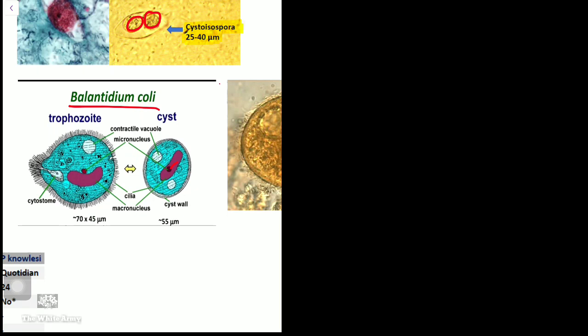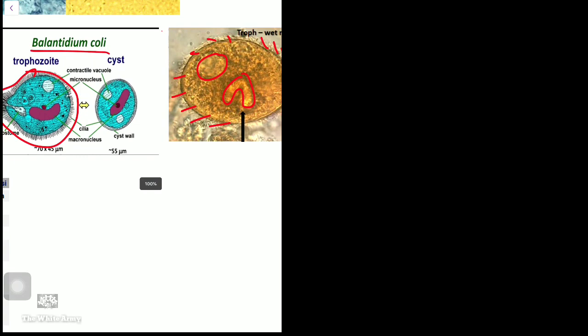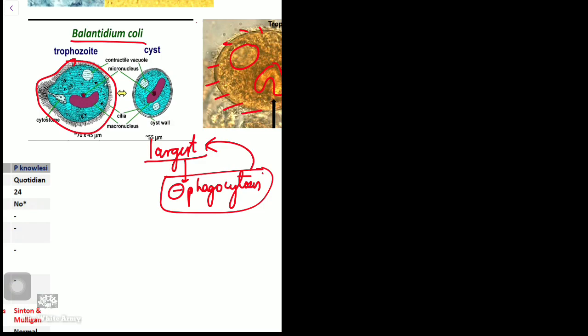Balantidium coli is a cilophoran, completely surrounded by cilia all around — visible in the actual image. It has two nuclei: a primary macronucleus and secondary micronucleus. It is one of the largest protozoa; owing to its large size, it evades phagocytosis, escaping due to its large size.